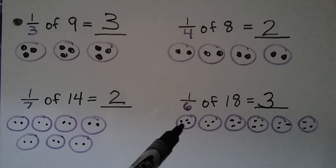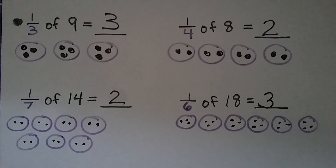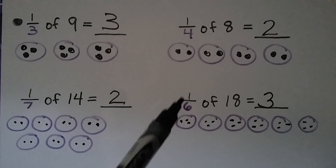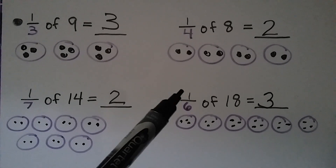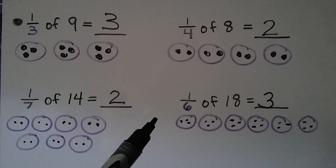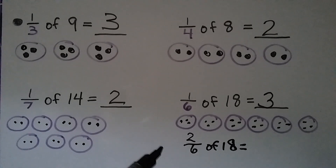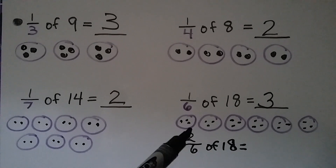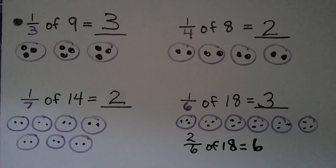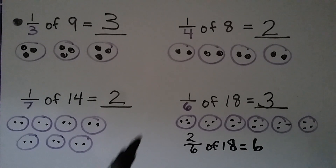We use one of the groups because the numerator is a one. What do you think would happen if it said two sixths of eighteen and the numerator was a two? Well, if it said that, then we would use the number of counters in two groups. Two sixths of eighteen would be six — three plus three. So that's a little extra. We're talking about unit fractions right now, and remember, a unit fraction has a one for a numerator.